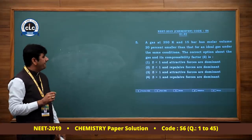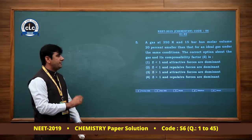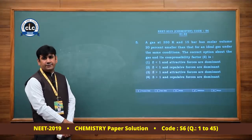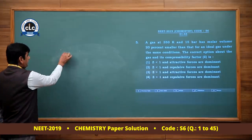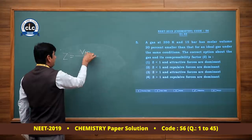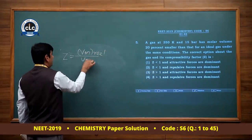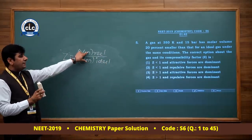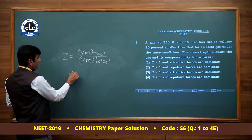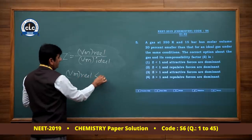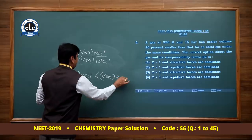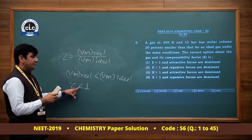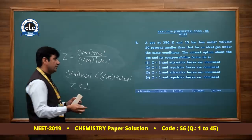Question number 5: A gas at 350 Kelvin and 15 bar has molar volume 20% smaller than that for an ideal gas under the same conditions. The compressibility factor Z = Vm(real) / Vm(ideal). Given Vm(real) is 20% smaller than Vm(ideal), so Vm(real) < Vm(ideal), therefore Z < 1. When Z < 1, attractive forces dominate. Option 1 is correct.